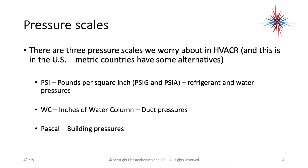Pressure scales — there are three pressure scales we worry about in HVAC, and this is in the U.S. Metric countries have some other alternatives. In the U.S. we use pounds per square inch, and that could be pounds per square inch gauge pressure or pounds per square inch absolute pressure. The difference between the two is 14.7 PSI. We use this for refrigerant and water pressure.